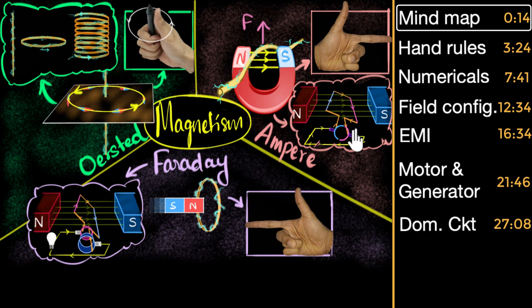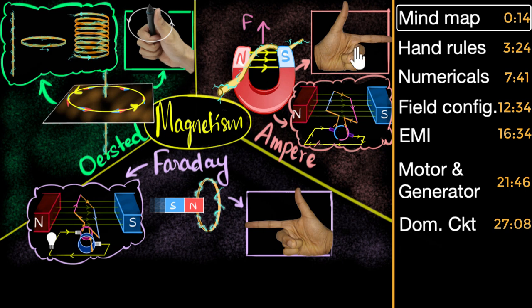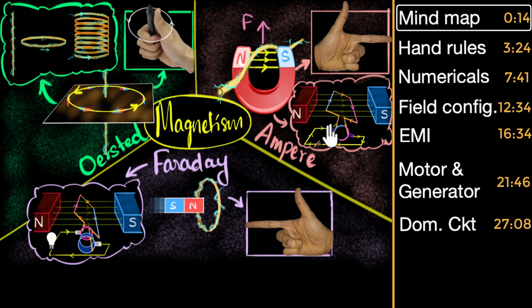Now we'll jump in and start recalling each and every bit of this, but not in the same order as your NCERT. Mainly because to help you in your exams, it makes a lot of sense to recall all the hand rules together, to do all the numericals together. Similarly, we will look at generators and motors together so that we can differentiate, compare and contrast between them.